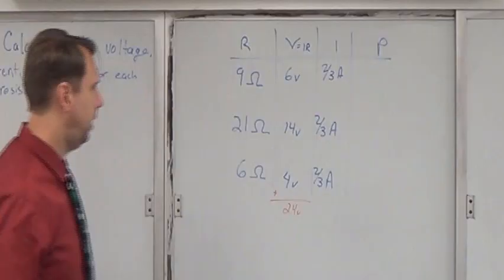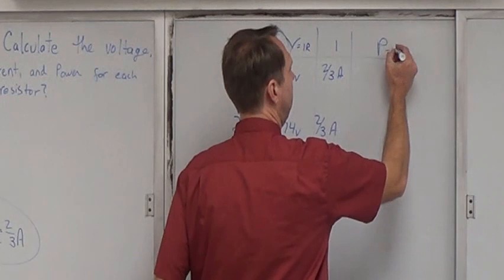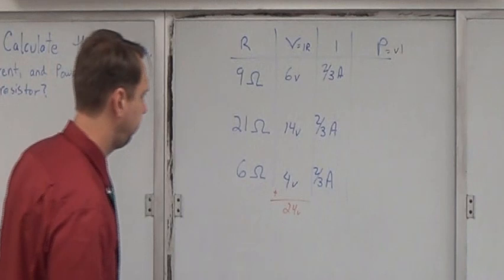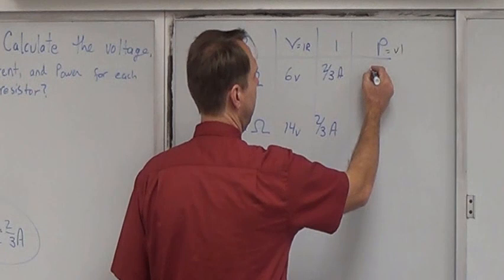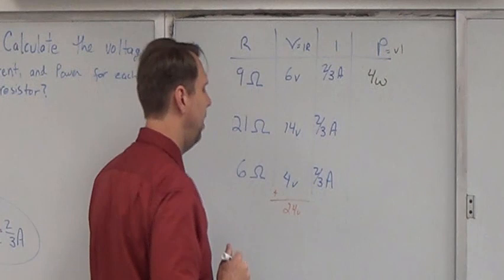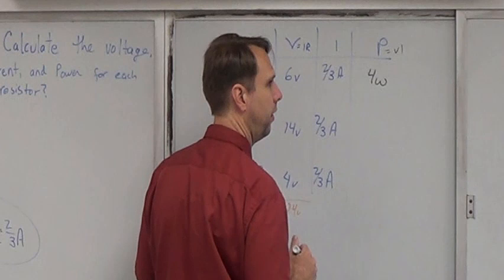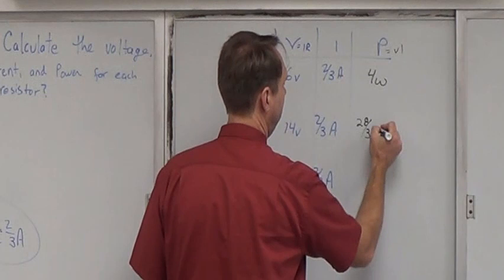The last step is to calculate the power. And we're going to use the equation power is voltage times current. P equals V times I. So in this case, I want 2 thirds of 6, and I can do that. That's going to be 4 watts. I want 2 thirds of 14. That's not quite as easy. 28 thirds. 28 thirds of a watt, 9.3.